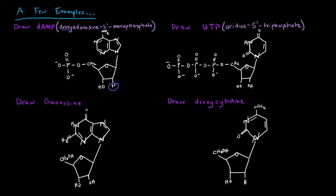Now at the one prime carbon, we have the base, and in this case it's adenine because it's called adenosine. So this adenine is attached here at this nitrogen. And then at the five prime carbon right up here, we should have one phosphate group. So I've drawn one phosphate group. So this was deoxyadenosine five prime monophosphate.